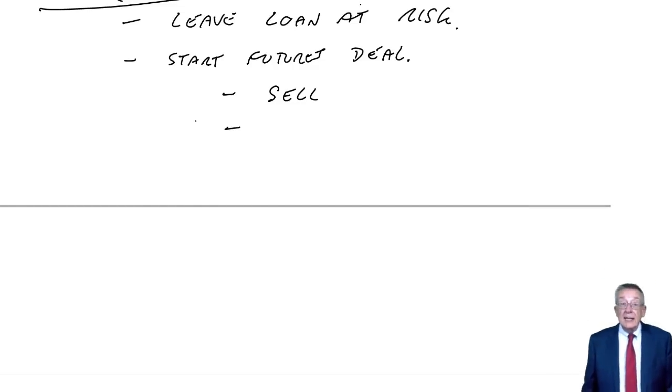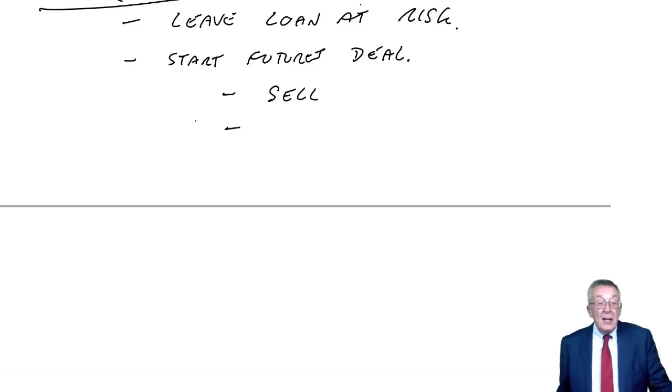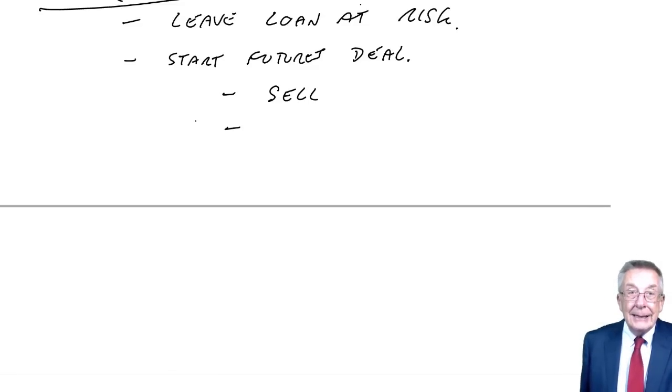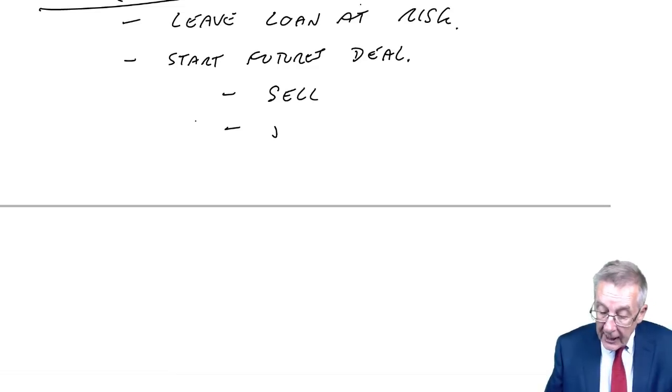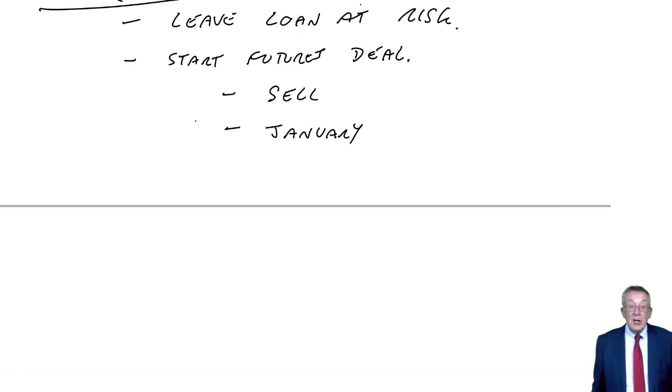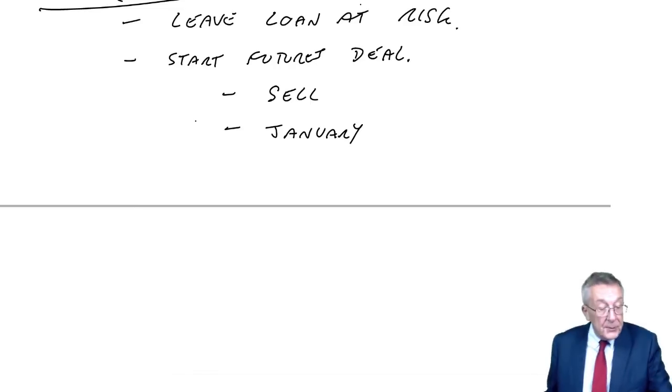Secondly, which futures are we going to deal in? They've told us there are three available. Just as with exchange futures, January futures must finish the deal by end of January, February by the end of February, March by the end of March. We always choose the first one after the start of the loan. The loan starts on 1st of January. We're at November. We'll therefore go for January futures at a price of 93.5.